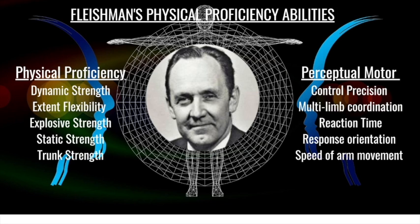Physical proficiency abilities — some examples include dynamic strength, flexibility, explosive strength, static strength, and trunk strength. None of them require you to perceive a situation; it's just your physical ability in those areas. Whereas perceptual motor abilities involve controlling and precise movements, coordination between different limbs, reaction time, how fast you can react and respond, and the speed of your arm movement. Physical proficiency is using your gross motor skills; perceptual motor abilities combine motor skills with how you perceive the scenario you are placed within.